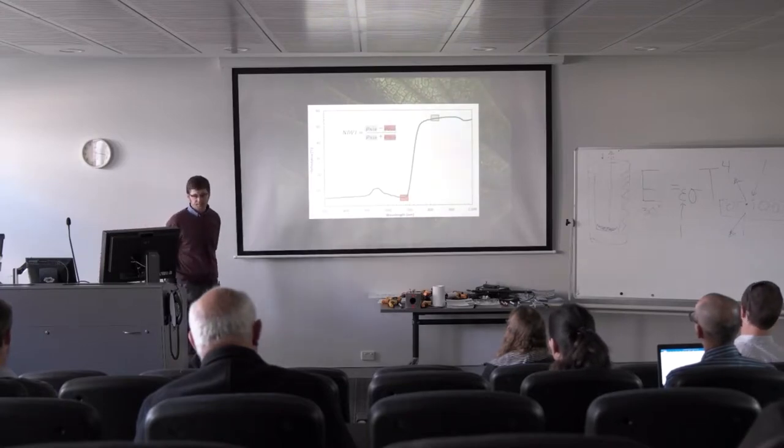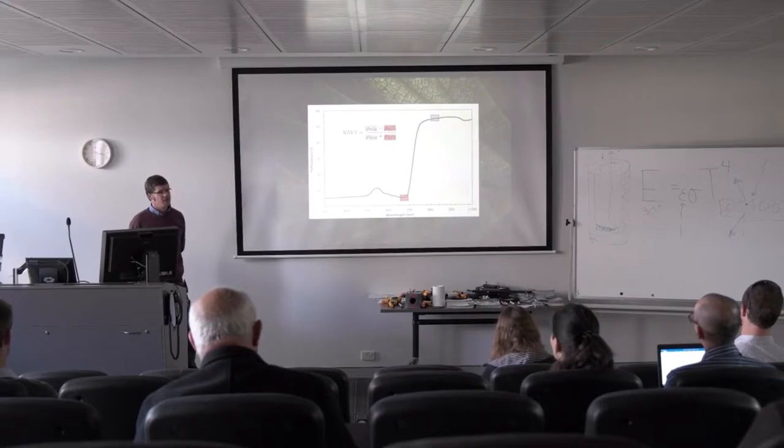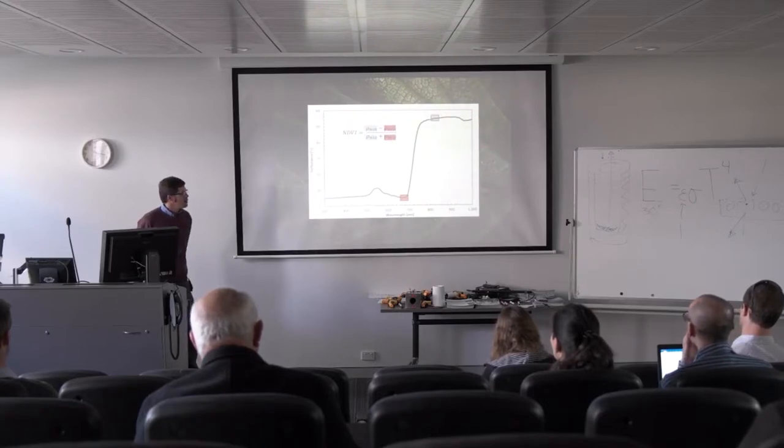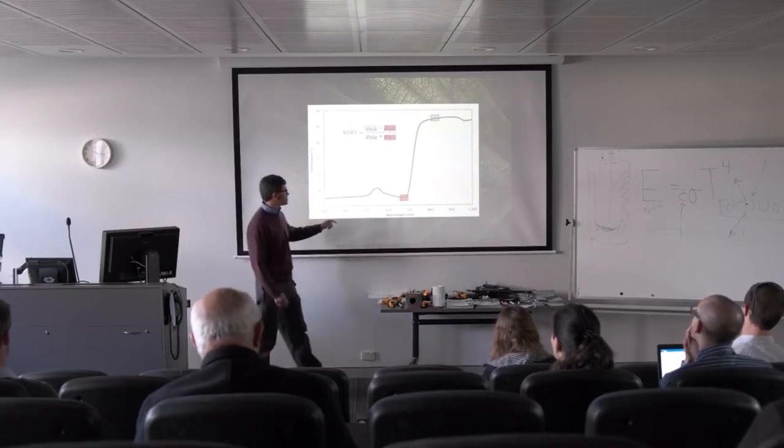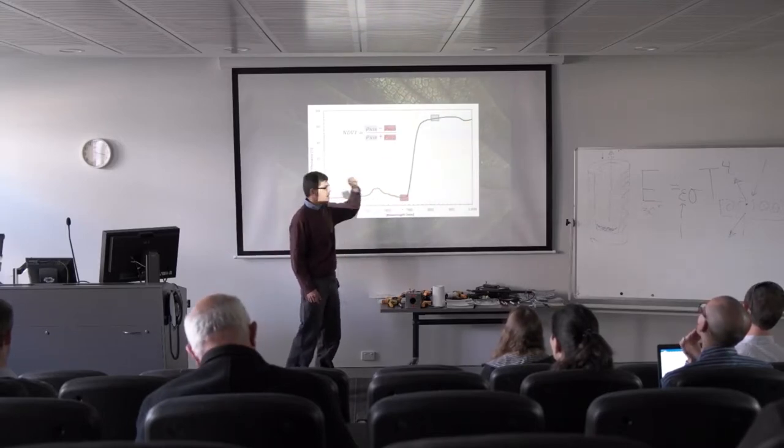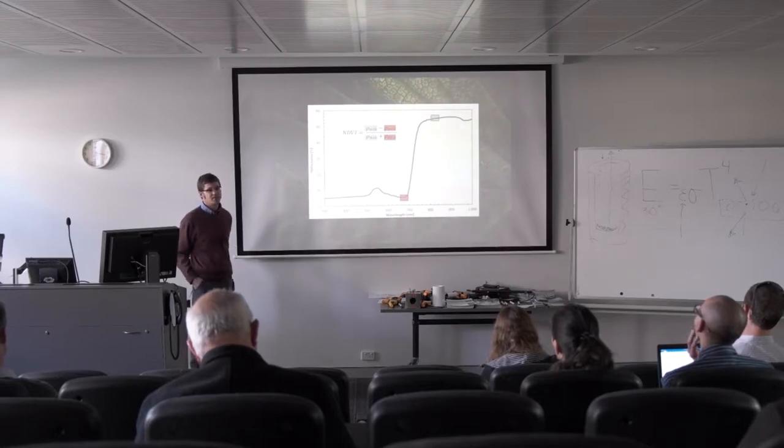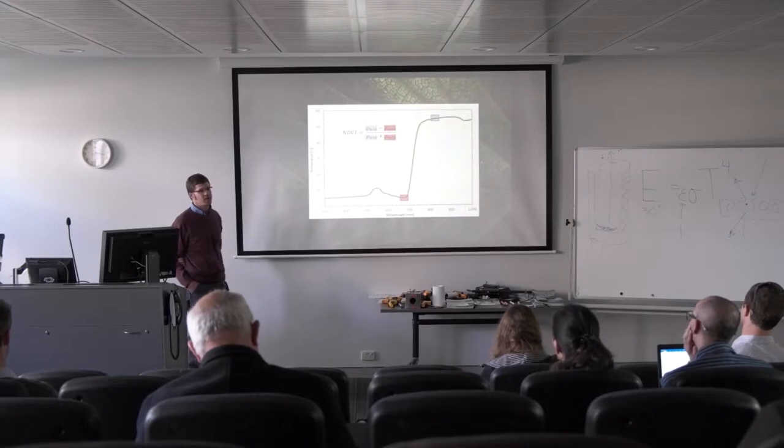You've probably heard this acronym before: it's the normalized difference vegetation index, where we take near infrared reflectance minus red reflectance in the numerator and then take the sum of the two in the denominator. Because we have strong absorption of photons and low reflection in the red and high reflection in the near infrared, essentially NDVI is a greenness index. We can measure it and it tells us about how much leaf area is covering the surface or how green the surface is.